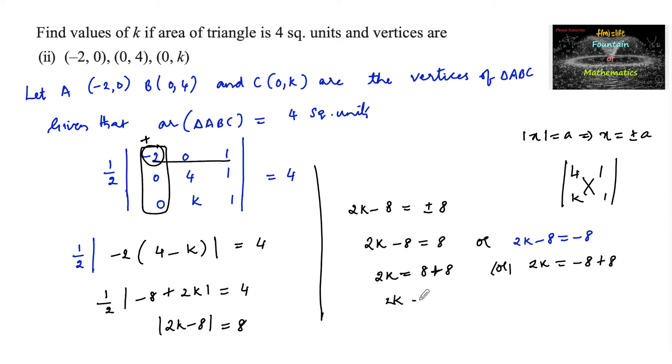So k is equal to 8 or k is equal to 0. To get the area of triangle 4 square units from the vertices minus 2 comma 0, 0 comma 4, and 0 comma k, the values of k can be taken as 0 or 8.